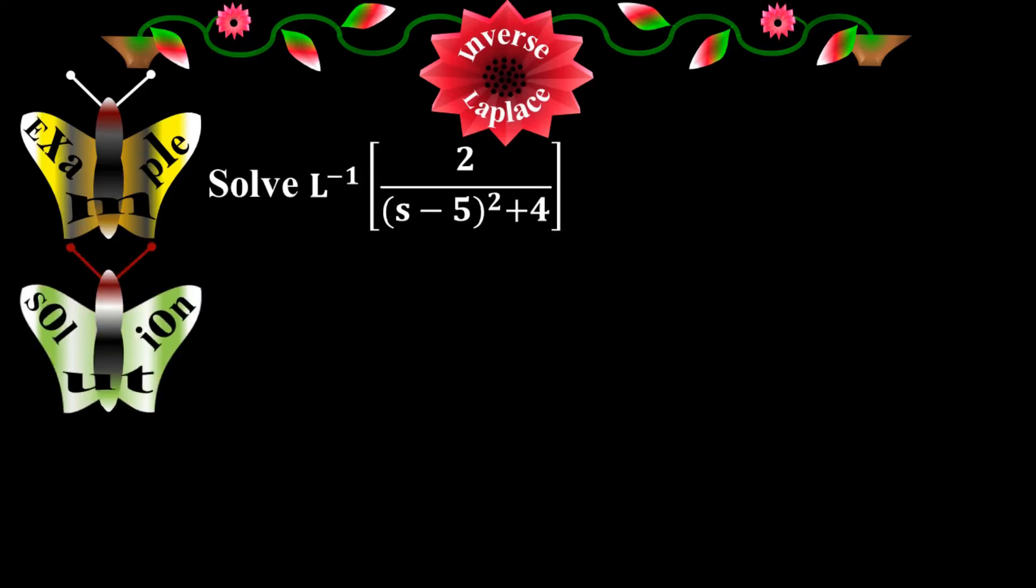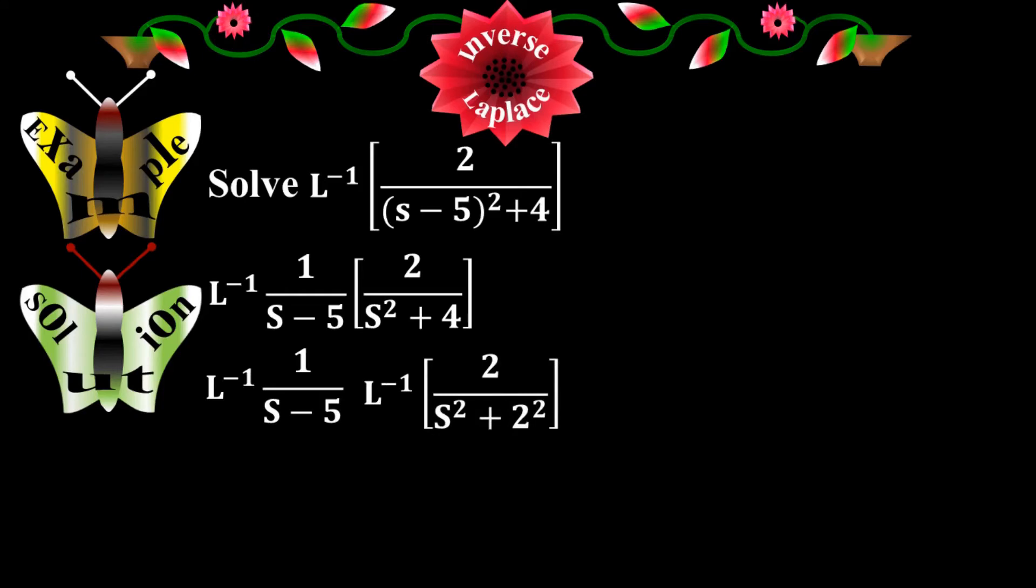Solution: one function is 1/(s-5) and the other function is 2/(s²+4). I'm going to take 1/(s-5) out of the function to have inverse Laplace of 1/(s-5). And now I'm left with 2/(s²+4), which is my second sub-function. So the given function f(x) is the combination of these two sub-functions. Let me write inverse Laplace of 1/(s-5) times inverse Laplace of 2/(s²+2²).